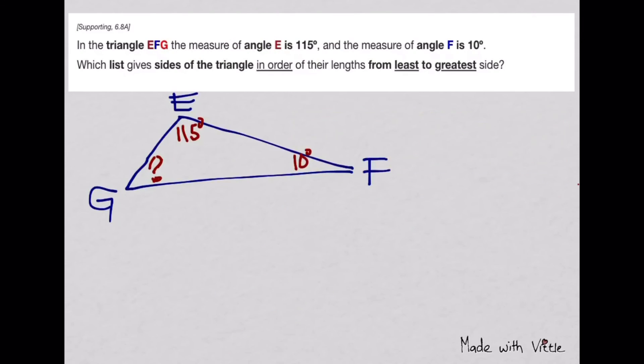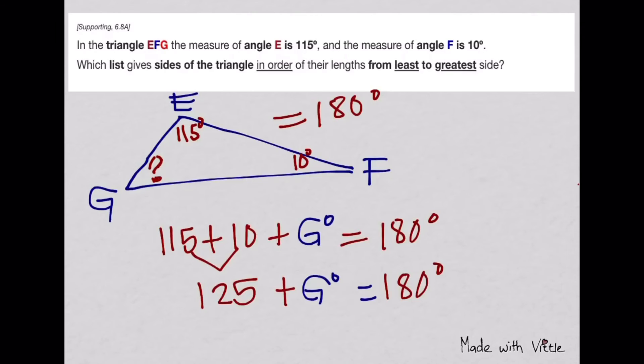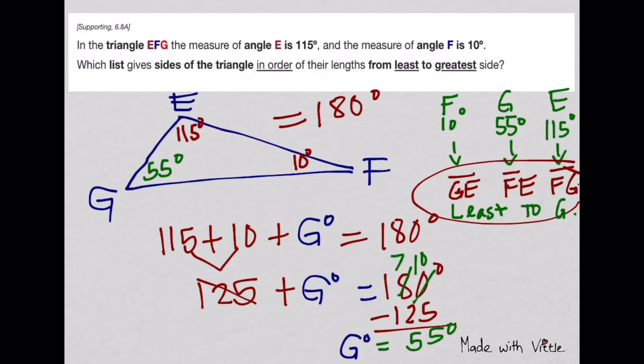In the triangle EFG, the measure of angle E is 115 degrees, and the measure of angle F is 10 degrees. Which list gives sides of the triangle in order of their lengths from least to greatest side? First things first, you have to find the measure of angle G. Now that you have the measurement of angle G, let's arrange the side lengths from least to greatest. Therefore, it's side GE, side FE, and side FG in order from least to greatest lengths.